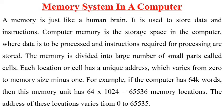In a computer, memory is just like a human brain — it is used to store data and instructions. Computer memory is a storage space in the computer where data is to be processed and instructions required for processing are stored. The memory is divided into a large number of small parts called cells. Each location or cell has a unique address which varies from 0 to memory size minus 1. For example, if the computer has 64K words, then its memory unit has 64 into 1024, which equals 65,536 memory locations. The address of these locations varies from 0 to 65,535.